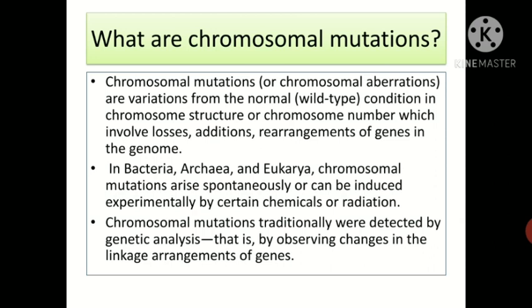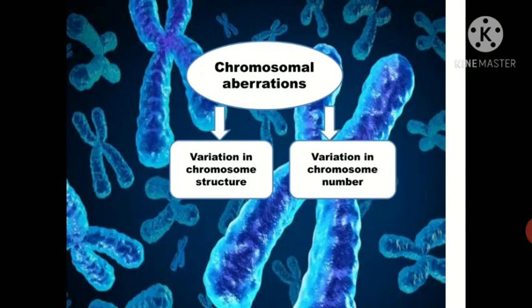A more precise description of chromosomal mutation is now possible where genome sequences can be compared. Chromosomal mutations are more common than once thought, and they contribute significantly to spontaneously aborted pregnancies and stillbirths, as well as to some forms of cancer. They are a significant cause of developmental disorders. Chromosomal aberration is divided into two groups: variation in chromosome structure and variation in chromosome number.